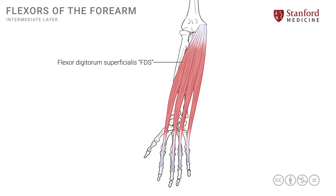The flexion produced by the flexor digitorum superficialis occurs across all joints it crosses, so there is a little flexion at the wrist joint, but its primary action is flexion of the small joints of the fingers. In each finger, the tendons attach onto the middle phalanges, and we'll look at the exact details in a subsequent lesson. This muscle is entirely innervated by the median nerve.